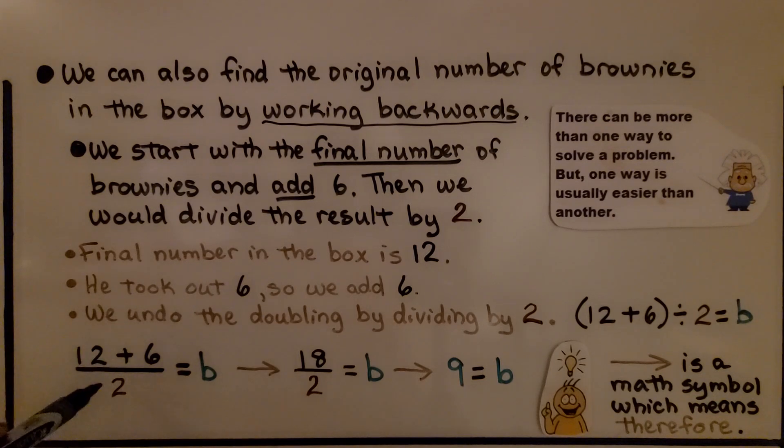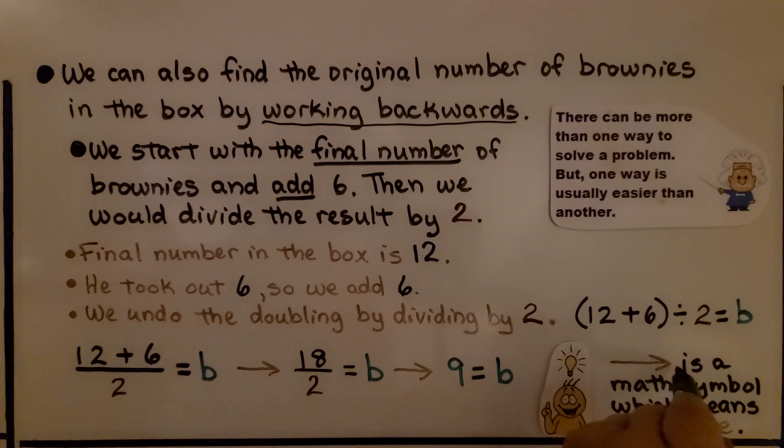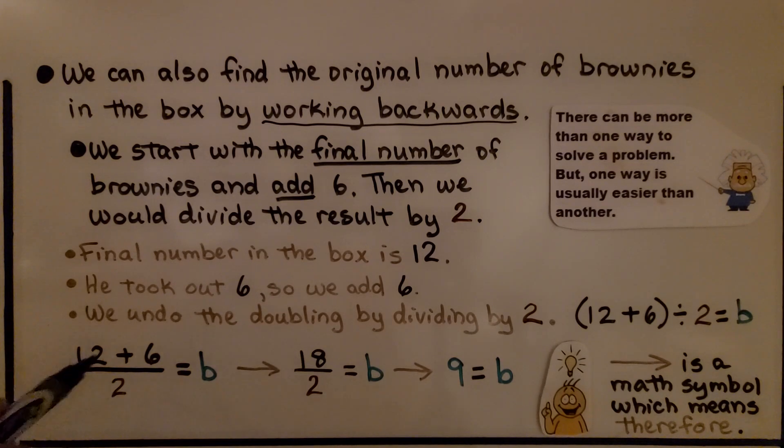So, 12 plus 6 divided by 2 equals b. Therefore, 18 divided by 2 equals b. And therefore, 9 equals b. If you ever see an arrow pointing to the right like this, it means therefore. It's a math symbol which means therefore. We have this, therefore we have this, therefore we have this. You'll see this a lot as you get older and get into higher levels of math.